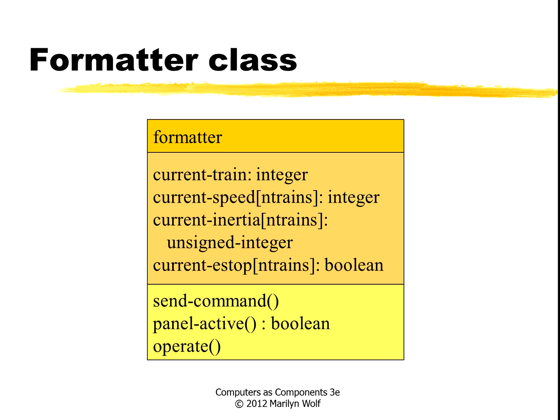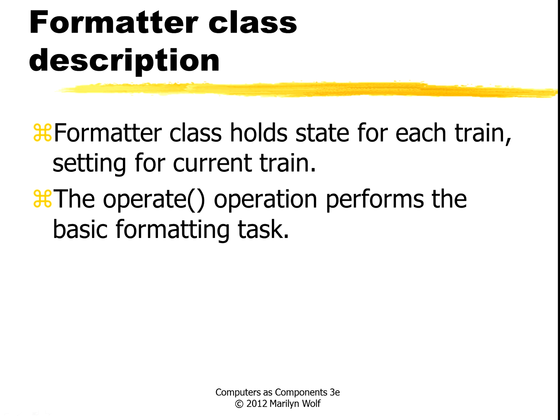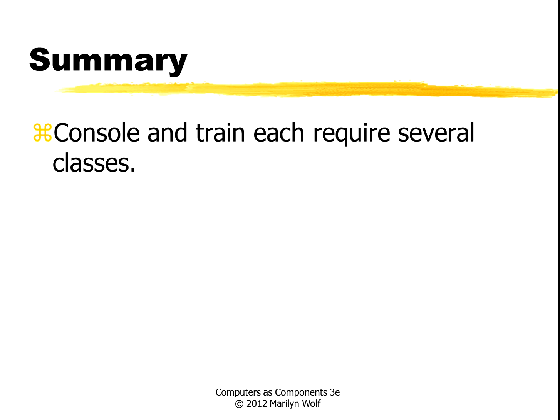Here's the formatter class. It remembers the current train, has an array for the current speed and inertia of every train, and also holds the emergency stop. We have a send command function, a panel activate function, and an operate function. The formatter class holds the state for each train. The operate function performs the basic formatting task — it takes these values and formats a packet. These are the classes for our train and for our console.